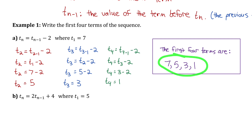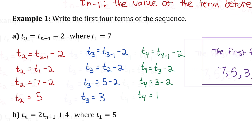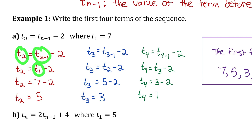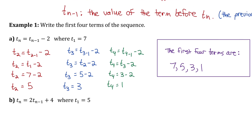Looking at this final sequence, to get the value of any term, I just look at the term before it and subtract 2. Hopefully you also understand why I call tn-1 the previous term. When finding term 2, tn-1 is term 1. When finding term 3, tn-1 is term 2. When finding term 4, tn-1 is term 3. So if I wanted term 10, I would take the previous term, term 9, and subtract 2.